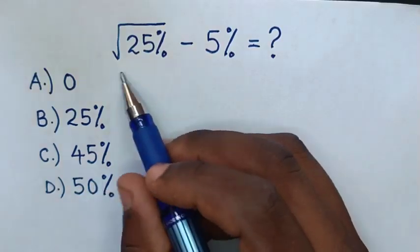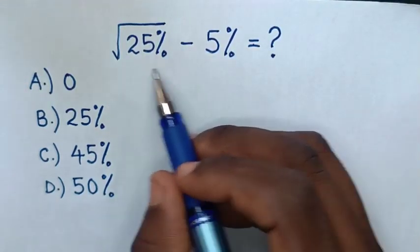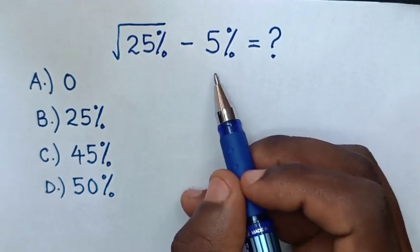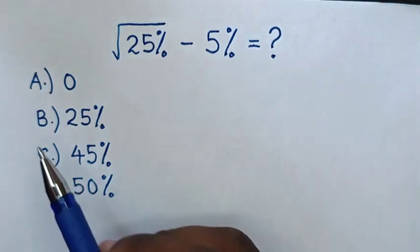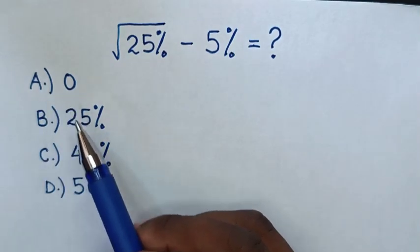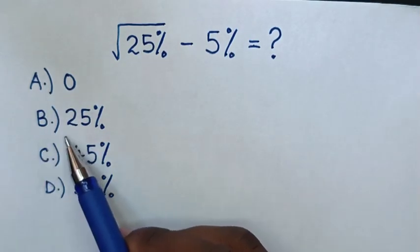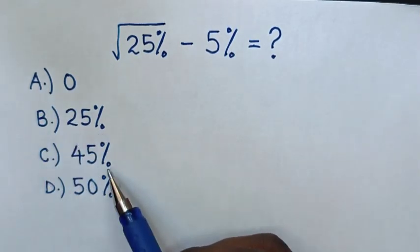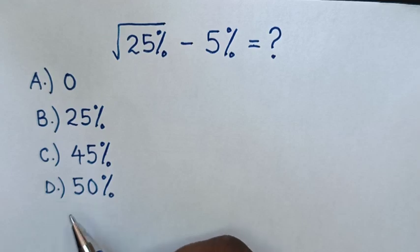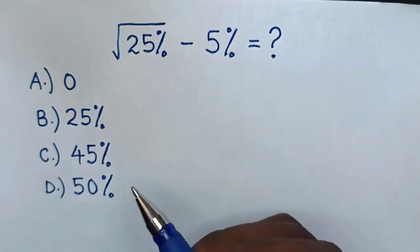Hello. How to solve square root of 25% minus 5%? Choose between the answers: A) 0, B) 25%, C) 45%, D) 50%.